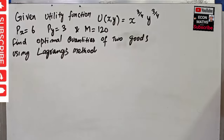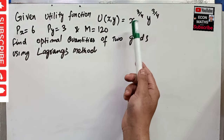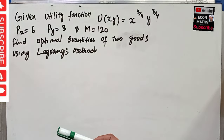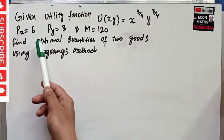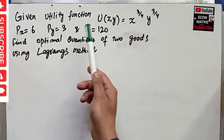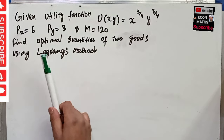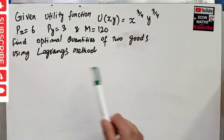In this video we will solve a problem that was asked by a brother on the Telegram channel of Econ Methods. The question is: given the utility function U(x,y) = x^(3/4) * y^(3/4), where x and y are the two goods, the price of x is six dollars, price of y is three dollars, and income of the consumer is 120 dollars. We have to find the optimal quantities of two goods using the Lagrange method.